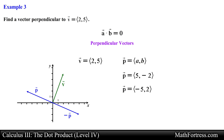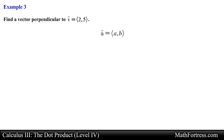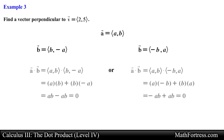In general, if you have a planar vector with components a and b, then the vector with components (b, −a) or (−b, a) will be orthogonal to the first vector.